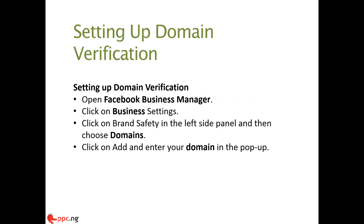Setting it up is quite easy. Click on Business Settings — either from your Ads Manager or by going to business.facebook.com. On the left-hand side panel, click on Brand Safety, then find the Domain menu. Click on Domain, then Add, and enter your domain in the pop-up. This is a short session, so watch from start to finish. These are the things you need to have in place if your Instagram and Facebook results haven't been yielding — they help maximize performance.